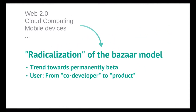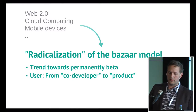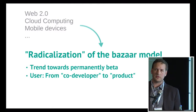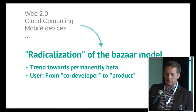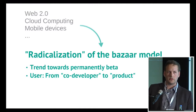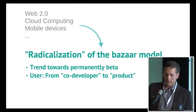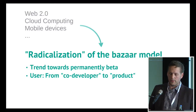What I think we can observe now, in the last 10 to 15 years, if we think about web 2.0 — the platform-based web, cloud computing, mobile devices — what we have is basically a radicalization of the bazaar model, and a trend towards a permanent beta status. For the user, that means his role is also changed dramatically.